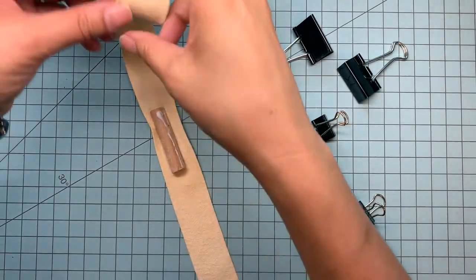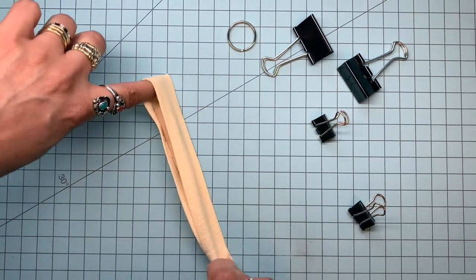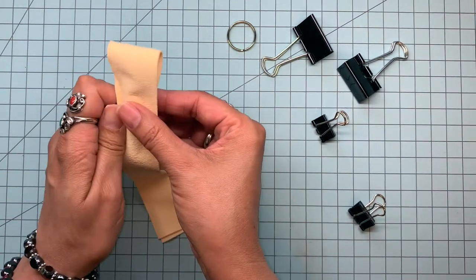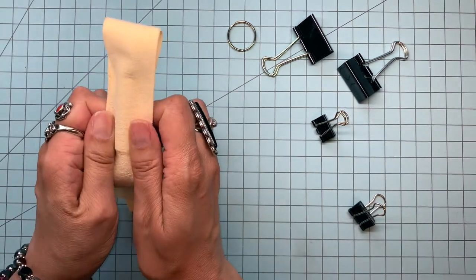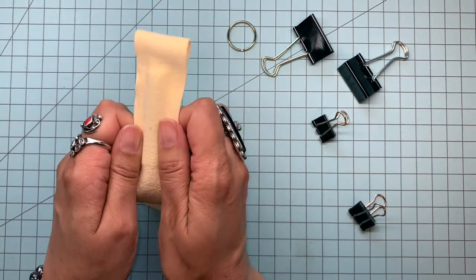So I just put the dowel in the middle, fold it over, leave about a finger length in there so you have room to put your key chain in when it's done, and then just kind of center it and stretch it around the dowel.